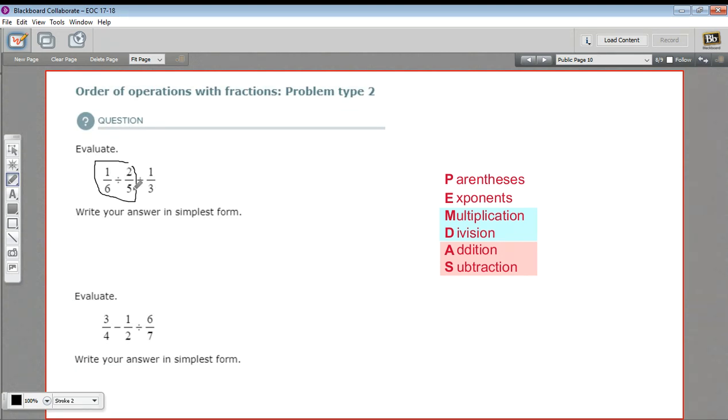1 sixth divided by 2 fifths. How do you divide fractions? The method you should have learned is that you multiply by the reciprocal. So this one that you're dividing by, you flip it upside down. So instead of 2 fifths, we get 5 halves. So that's the same thing as 1 sixths multiplied by 5 halves. When we multiply, we do across the top and across the bottom. So I'm going to get 5 twelfths. So this problem comes down to 5 twelfths plus 1 third.